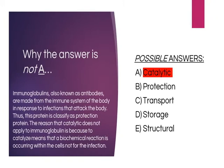Option A: Catalytic. Immunoglobulins, also known as antibodies, are made from the immune system of the body in response to infections that attack the body. Thus, this protein is classified as a protection protein. The reason that catalytic does not apply to immunoglobulins is because to catalyze means that a biochemical reaction is occurring within the cells, not for the infections.